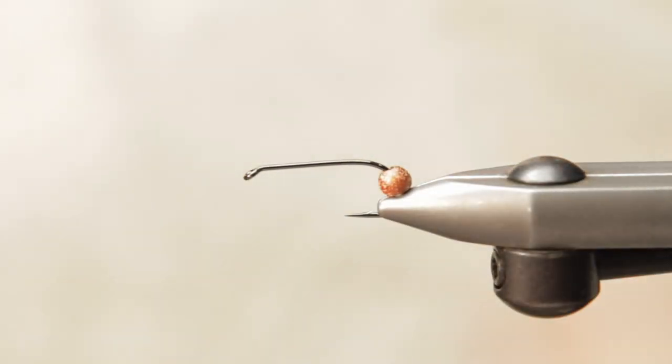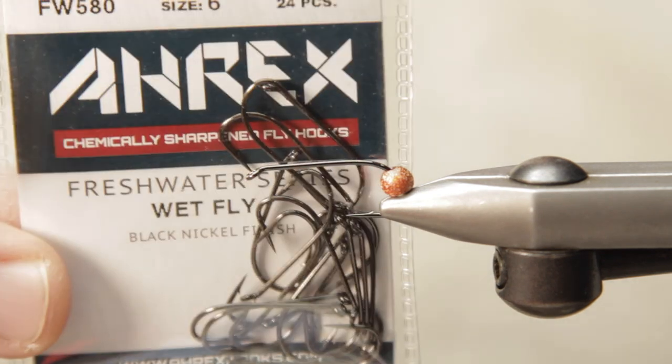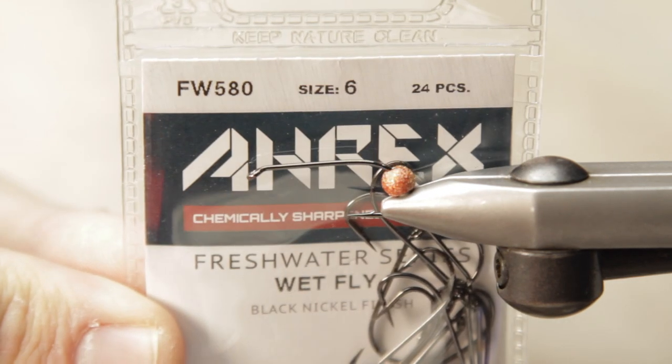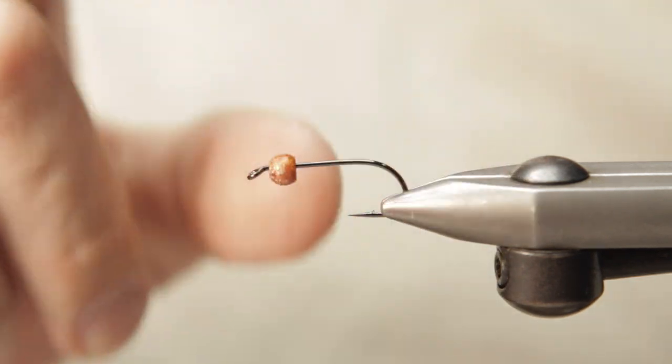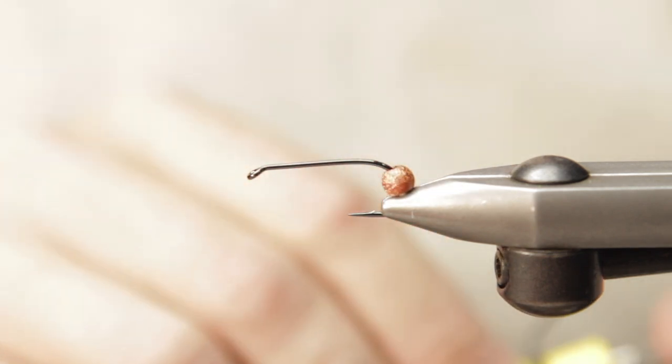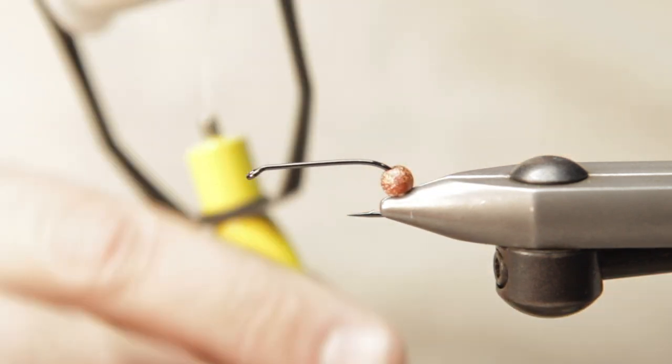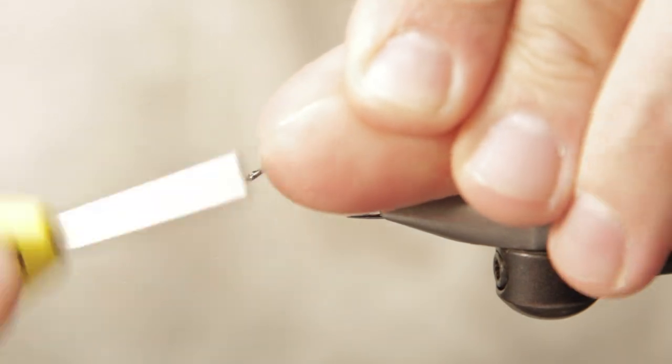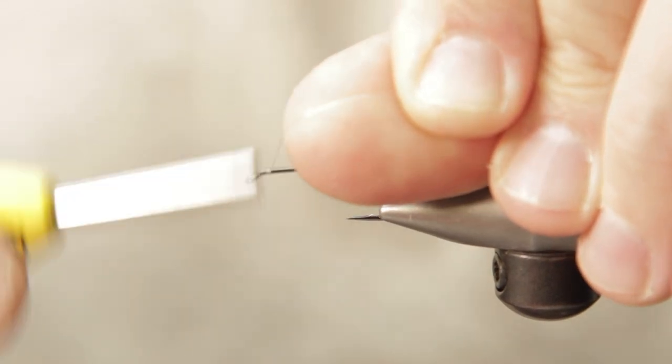All right, hey guys, Matt here from Loon Outdoors. Today we're going to be tying the King Tubby Stone. We're going to start with an FW 580 from Ahrex Hooks and a 3/16 gold metallic gritty bead. 50D is going to be our thread of choice.